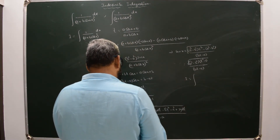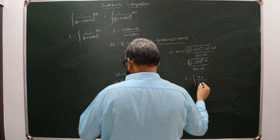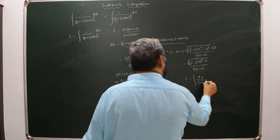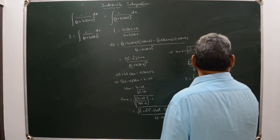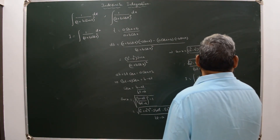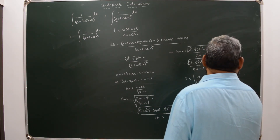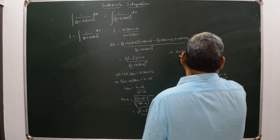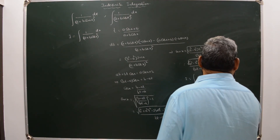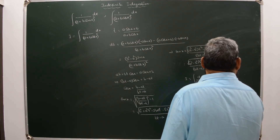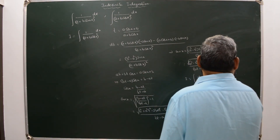For the example ∫1/(5 + 4cosX)² dx, here a = 5 and b = 4. So dt = (b² - a²)·sinX/(5 + 4cosX)² = (16 - 25)·sinX/(5 + 4cosX)² = -9·sinX/(5 + 4cosX)² dx. Also sinX = 3√(t² - 1)/(4t - 5).